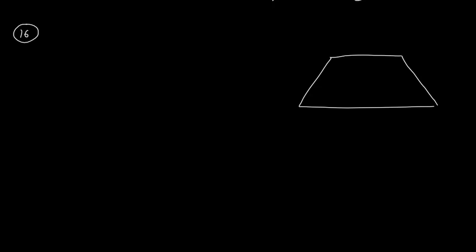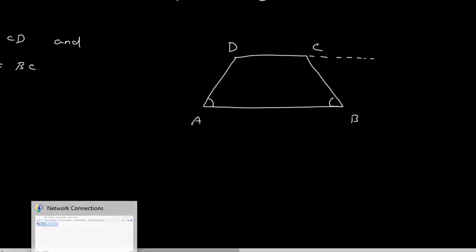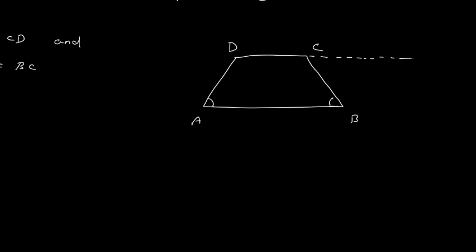The diagram will be something like this: A, B, C, D. What is given is AB parallel to CD and AD equals BC. You have to prove that angle A equals angle B. For that, you can extend this side and draw a line from B parallel to AD. Do this construction and say this is point E. Now ABDE is a parallelogram as these two sides are parallel and these two sides are parallel.